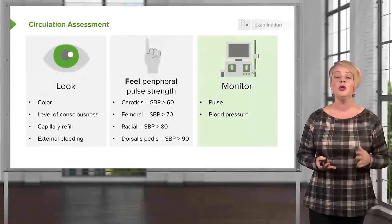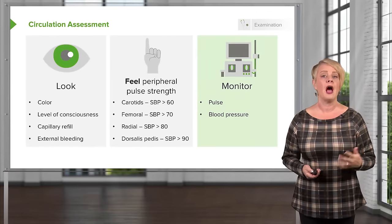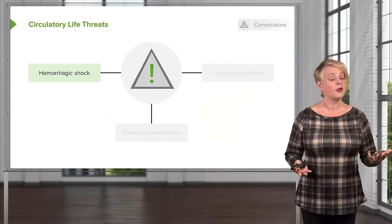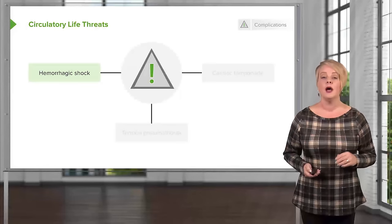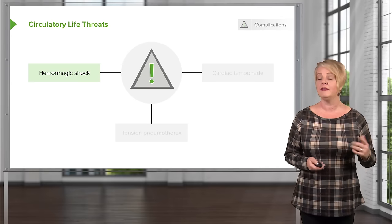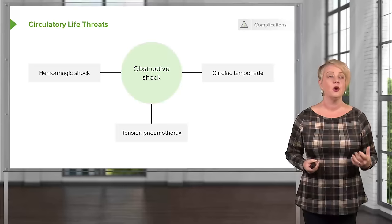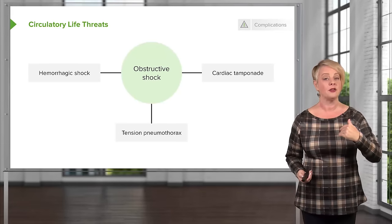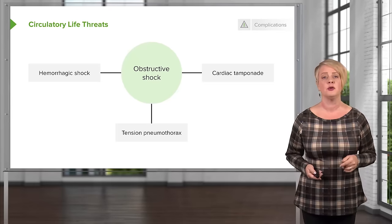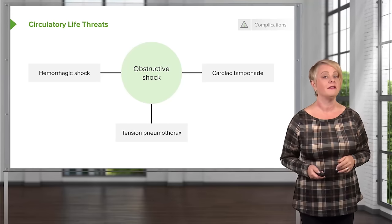Once the patient is on the monitor, note their heart rate and blood pressure — these circulatory vital signs will guide your resuscitation. Our big circulatory life threat is hemorrhagic shock, the most common cause of death among traumatically injured patients. However, consider other causes of shock as well, specifically tension pneumothorax and cardiac tamponade — both are forms of obstructive shock where injury prevents normal venous return and impairs cardiac output. Not all shock in trauma is related to hemorrhage; there are other disease processes that can lead to shock.